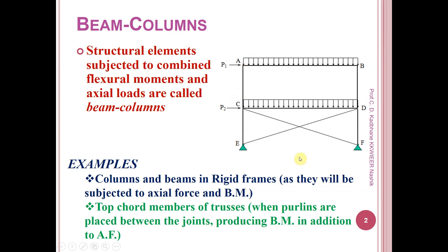Look at this two-story industrial or multi-story structure. These are vertical members or columns provided with bracings at the ground floor. Whenever lateral wind loads are acting at points A and C, these columns are subjected to gravity load in the downward direction and lateral wind loads — meaning these columns are subjected to axial load as well as bending moment. Therefore, this column is called a beam column.